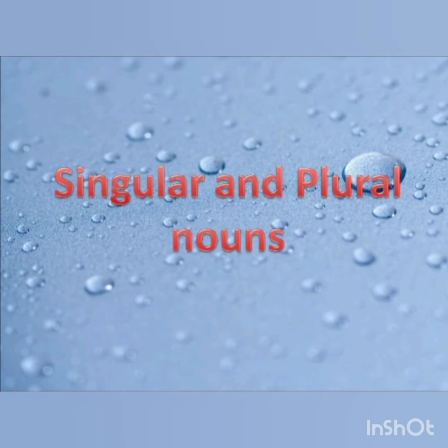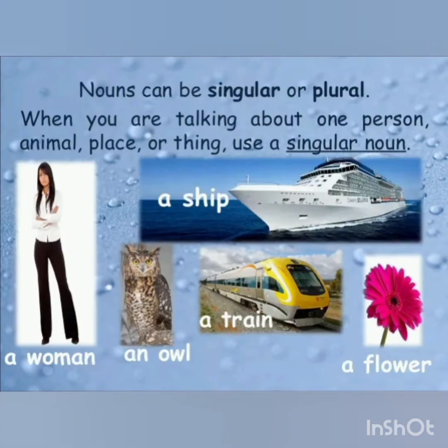Hi kids! Today we will learn about singular and plural naming words, or nouns. A noun can refer to one or more than one person, place, animal, or thing. When you are talking about one person, animal, place, or thing, you use a singular noun.